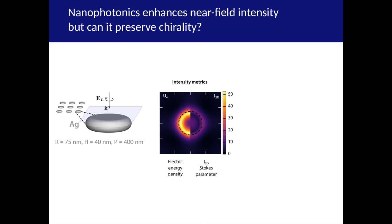The disk array has a plasmon resonance where the near field intensity peaks. Because it is an electric dipole resonance, the intensity maximum occurs near the edge of the nanodisc. The electric field is mostly out of plane, so the in-plane Stokes parameter enhancement is lower than the electric energy density. But all in all, it shows good enhancement values.